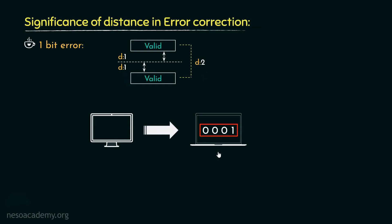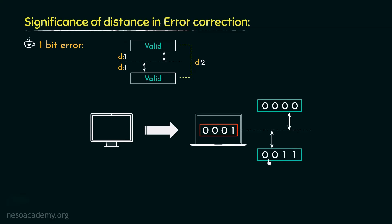Basically, if this is invalid, then either this pattern 0 0 0 0 or this one 0 0 1 1 — any one of them can be the valid pattern. Both are unit distant from this invalid pattern. Now say during transmission the LSB got toggled, then this would have been the valid code. Or else, say this bit next to the LSB got corrupted and the receiver received this code 0 0 0 1, then this should have been the valid pattern. So basically, the receiver can't be certain about which of these was the valid code that was transmitted by the sender.